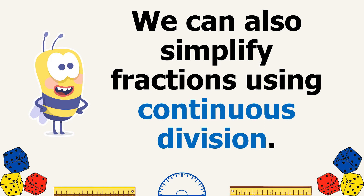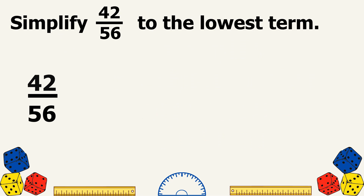We can also simplify fractions using continuous division. For example, simplify 42 over 56 to the lowest term. We will use continuous division, meaning we will continuously divide the numerator and denominator by a common factor until there is no other common factor that can divide both other than 1. A common factor that can divide both 42 and 56 is 2.